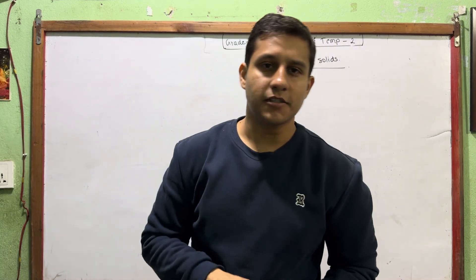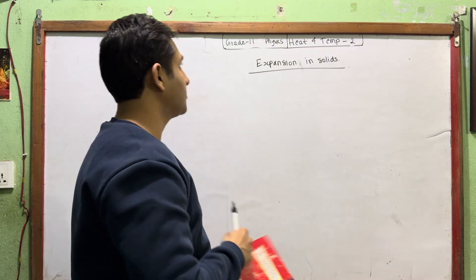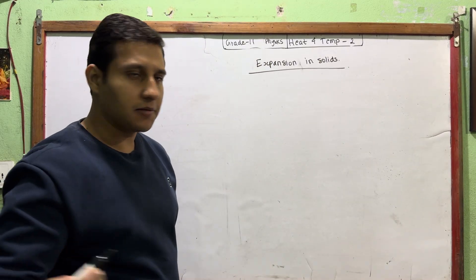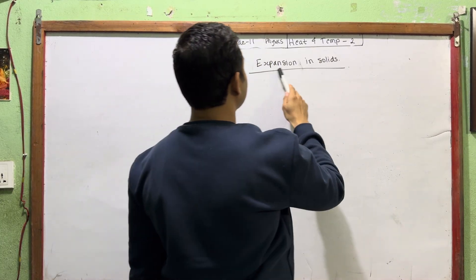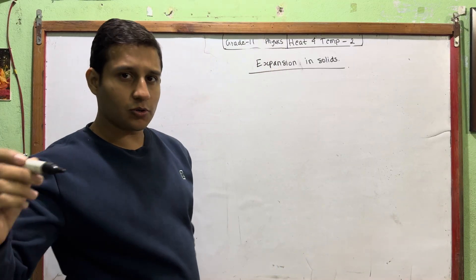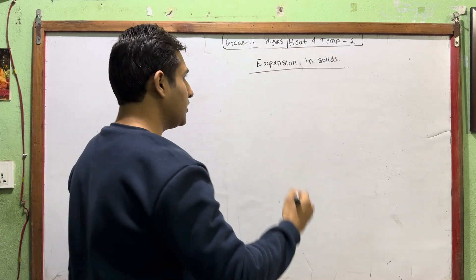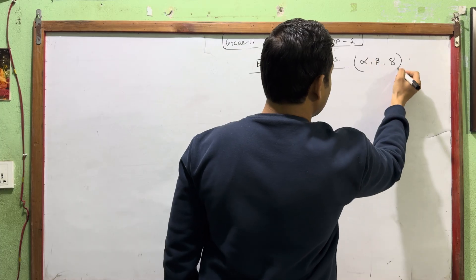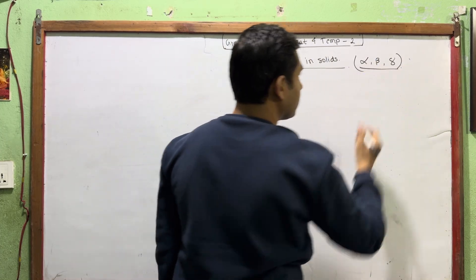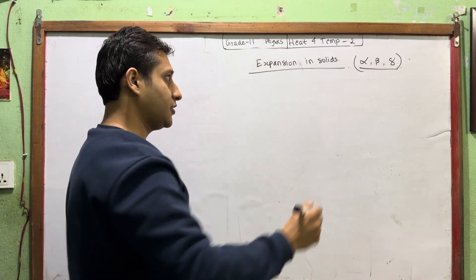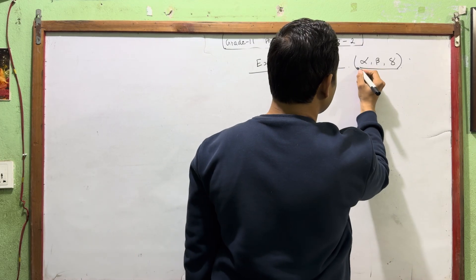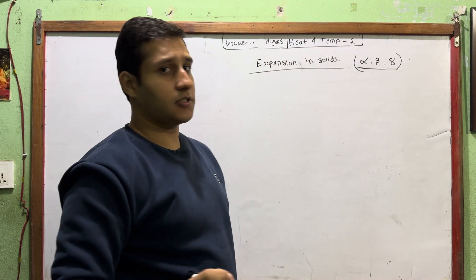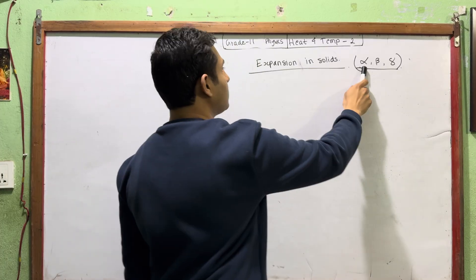Hello and welcome to today's class. Today we are in grade 11 physics, heat and temperature, part 2. It is important to know the expansion in solids. In the expansion of solids, we have alpha, beta, and gamma. We have to explain these three things. They are very important. If there is a long question, we have to explain these three things.